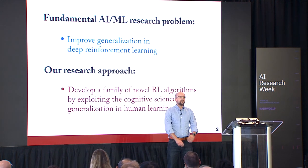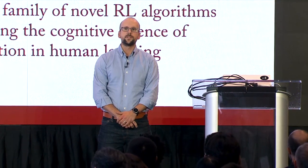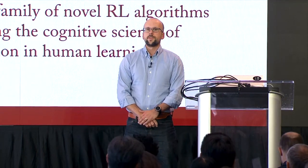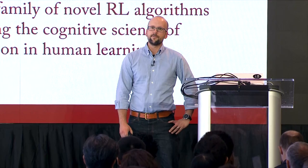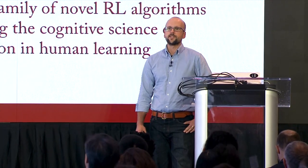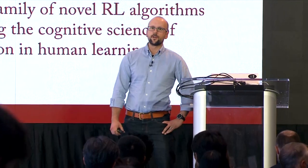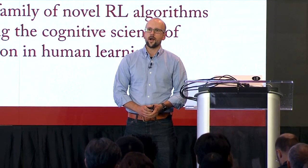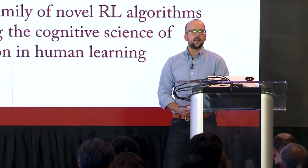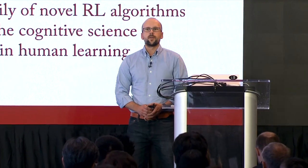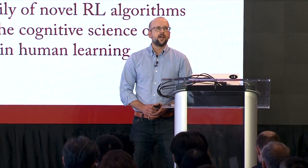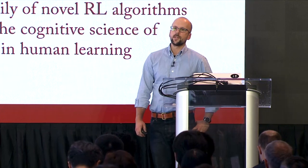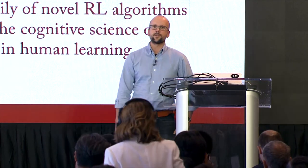This is an exciting time in deep reinforcement learning — we have systems that can do incredibly impressive things like play Go at superhuman levels. But there's also widespread understanding that the field is missing something fundamental: how do we generalize what we learn in one situation to a new situation? I'm a computational cognitive scientist interested in what we can take from the study of generalization in biological systems and apply it to artificial intelligence and machine learning.